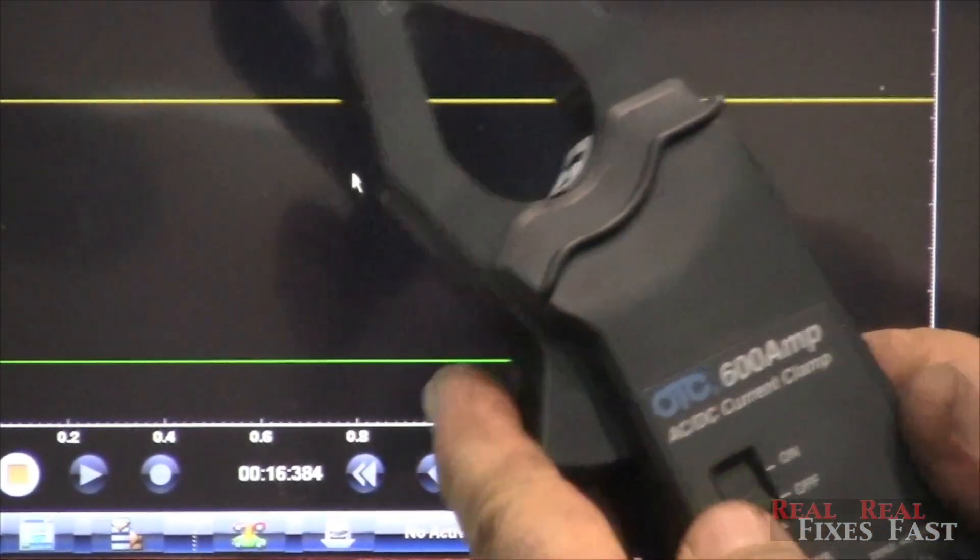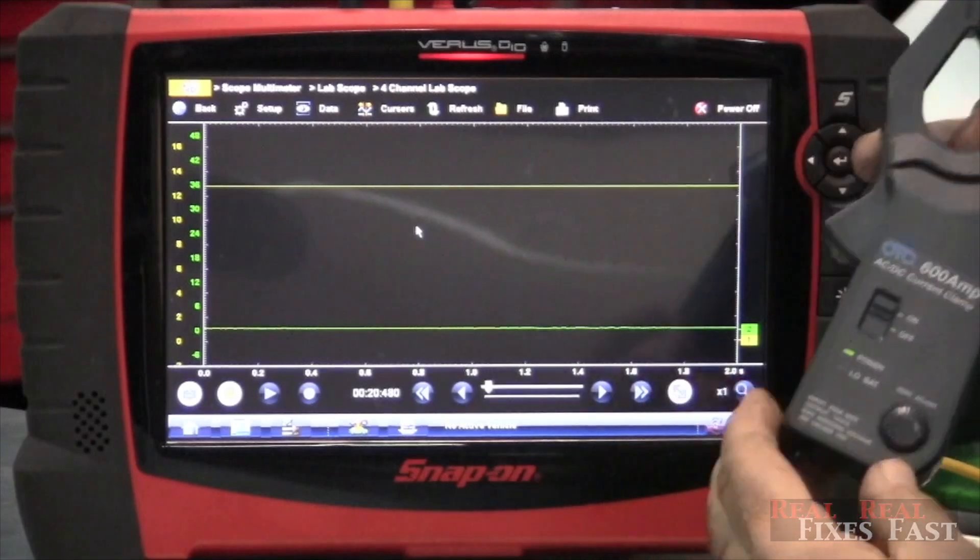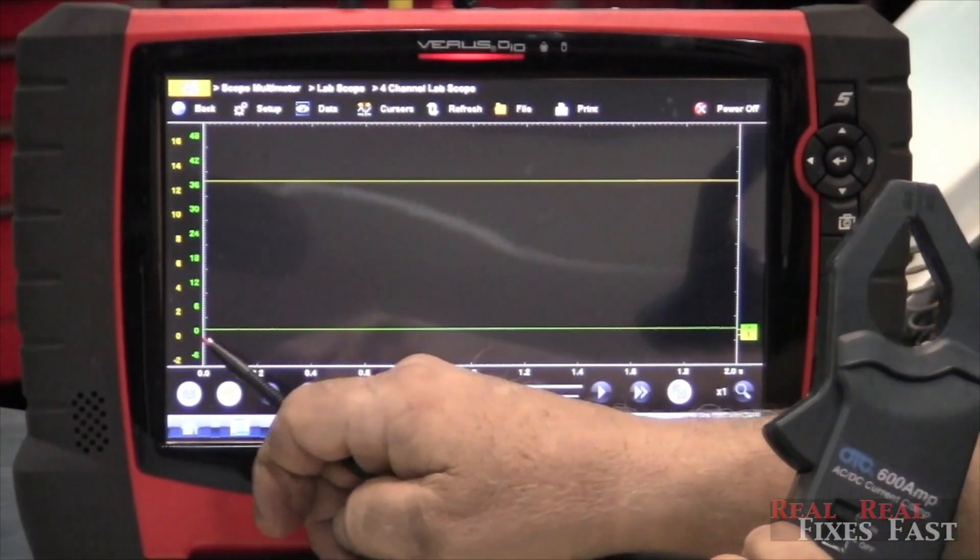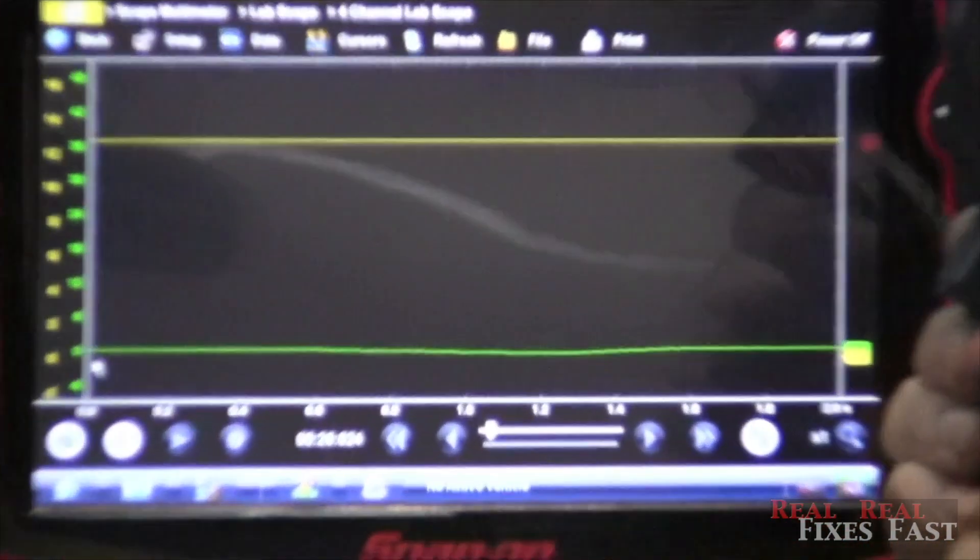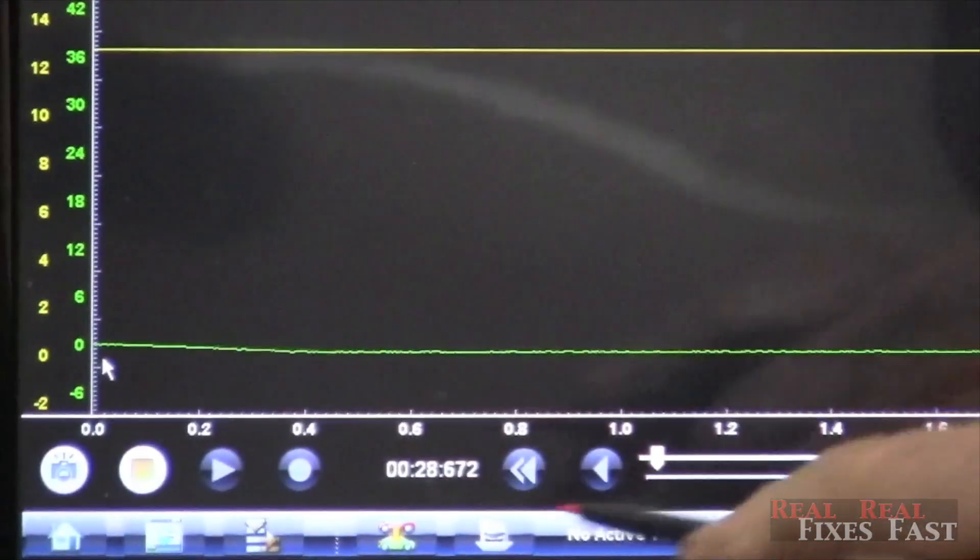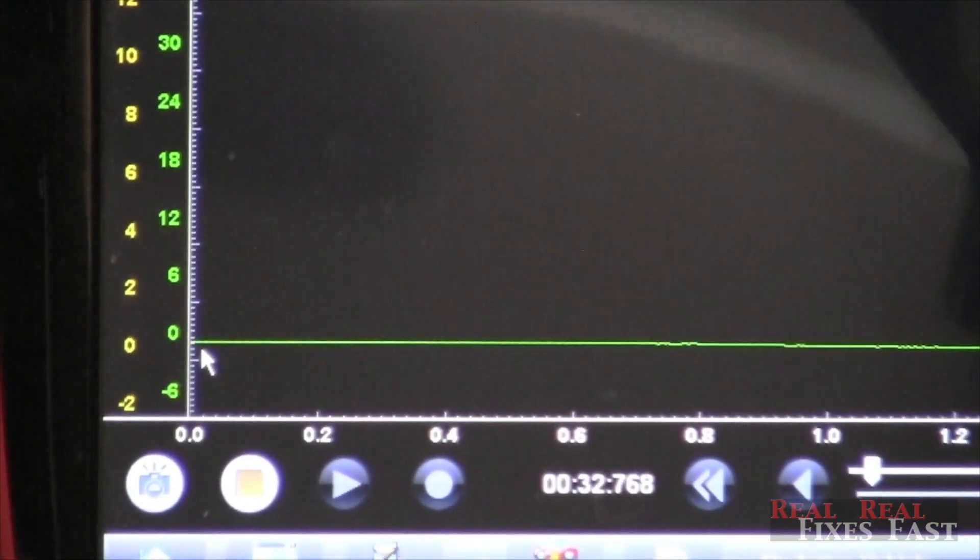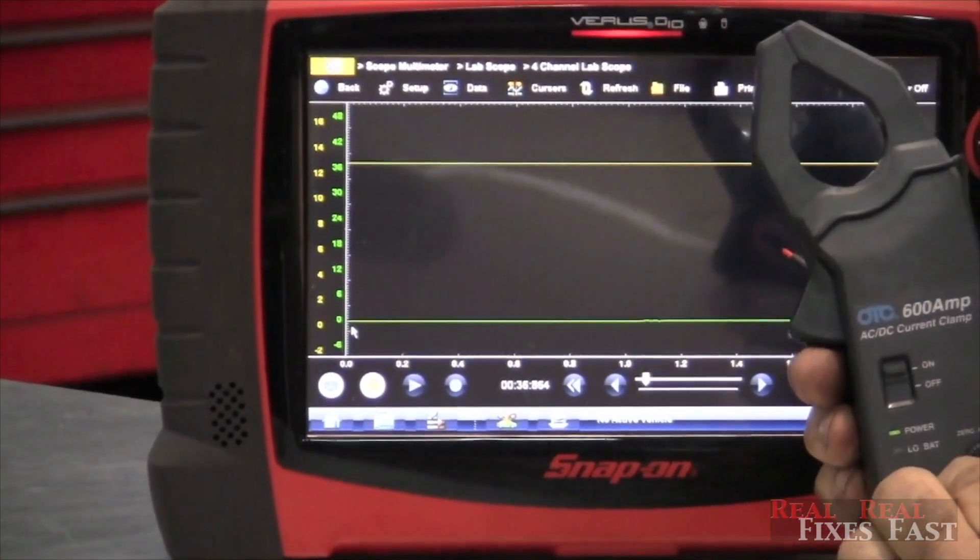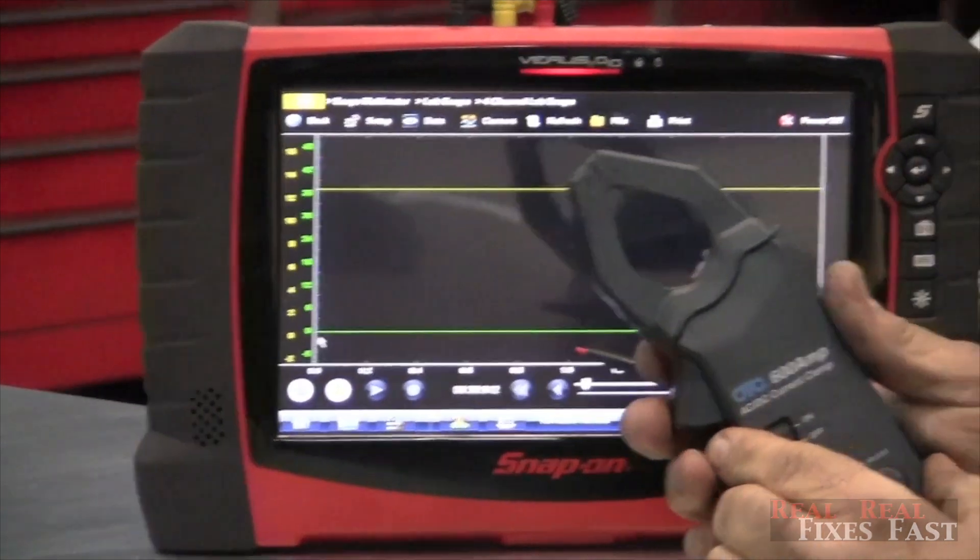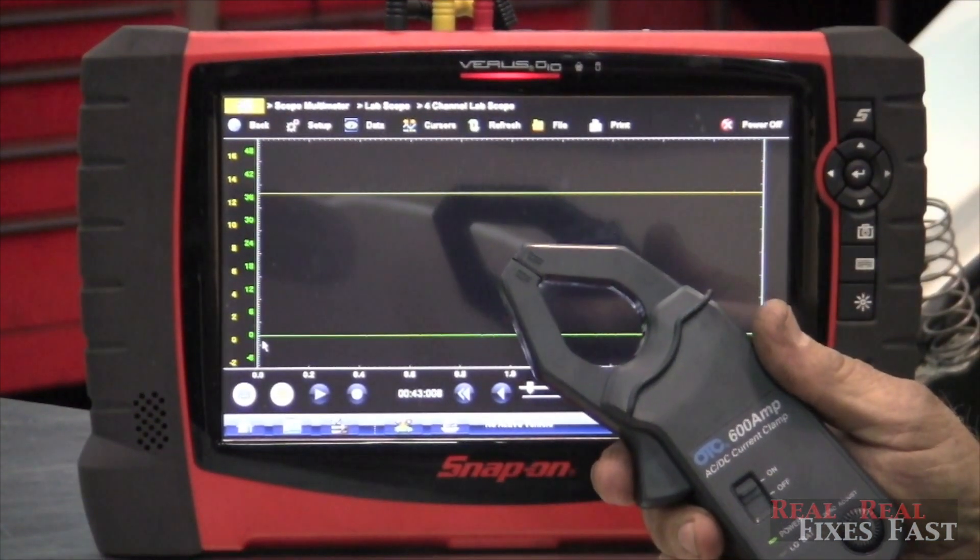Now we're going to take this, turn it on, and you adjust the zero on this scope by trying to get it as close to zero as you can just by rotating this. You can see it move there a little bit when I rotate this. So you want to move it as close to zero as you can get it. Now we take this and we simply clamp it around the wire going from the battery to the starter.